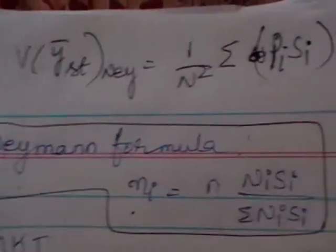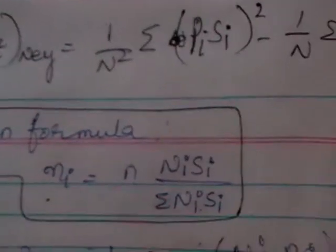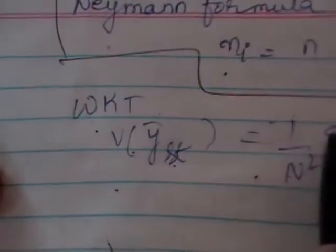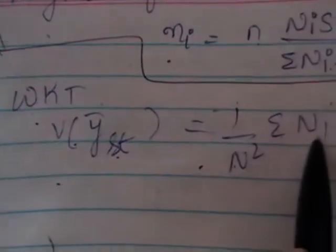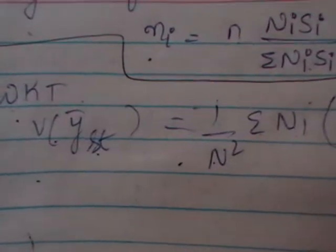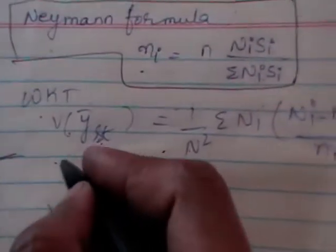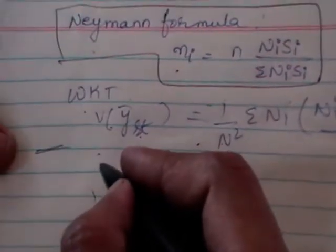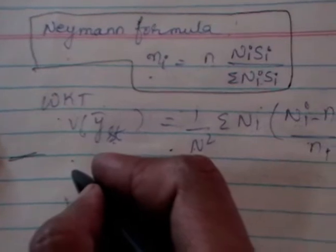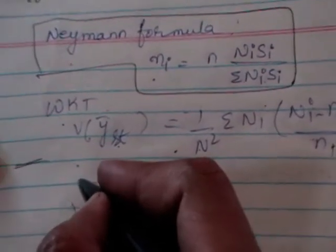We already know that the variance of Y-bar stratified is equal to 1 by N-square times Sigma Ni into (Ni minus ni) by Ni into Si-square. This was already derived under Theorem 2 of stratified random sampling.